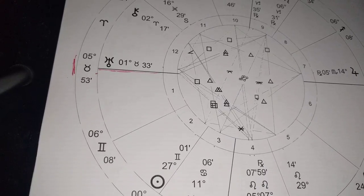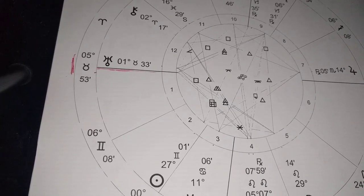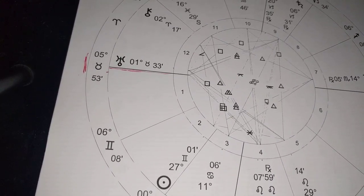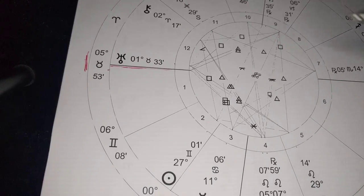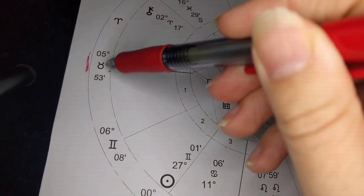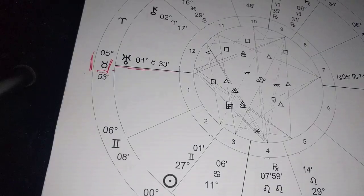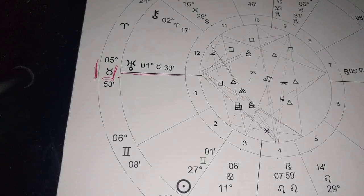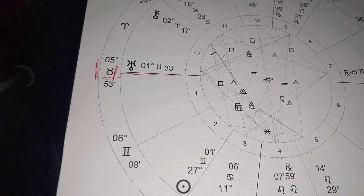Now, the Taurus energy for the rising here is also the ruler of the first house, and this is the physical body. Taurus rising can have a sturdiness to it, a strength.